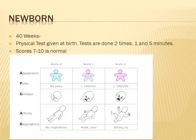When the newborn arrives, usually around 40 weeks, a physical test called the APGAR test is administered — once in the first minute and again at five minutes. Scores of 7 to 10 are considered normal, indicating normal pulse, activity, and breathing. A score under five may result in the baby being placed in a neonatal intensive care unit.